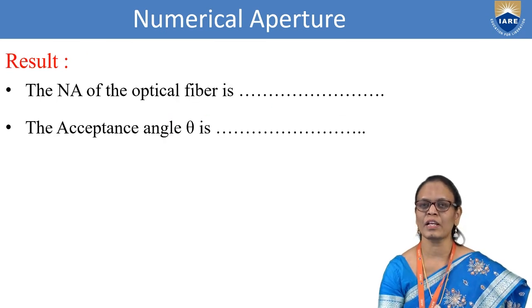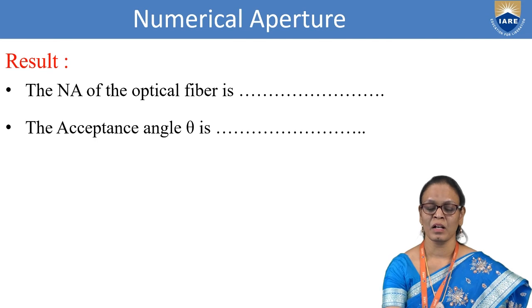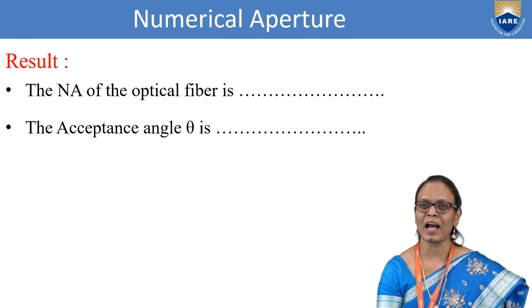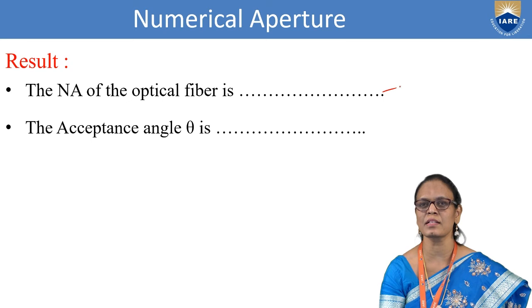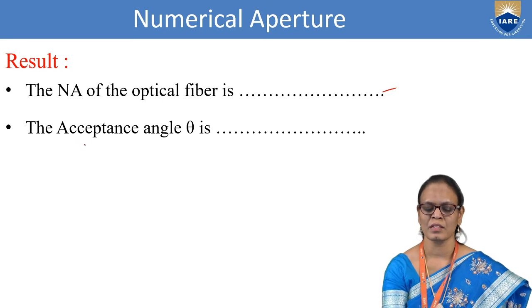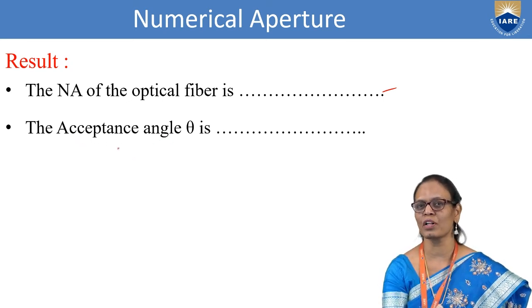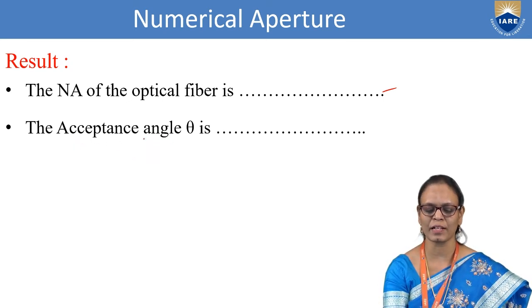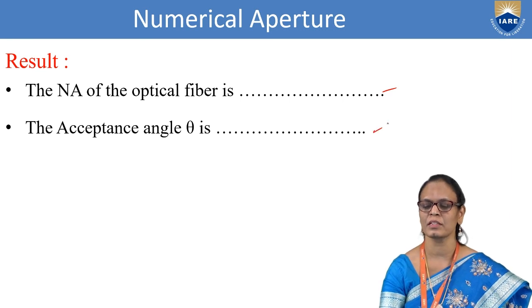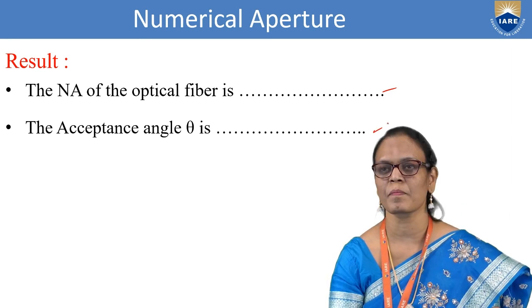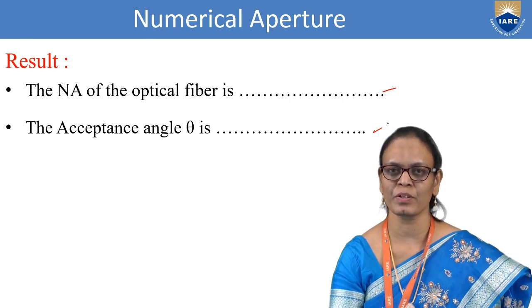We can find the average of all the readings and write the numerical aperture as the final result. Similarly, take the average of all the acceptance angles, and the average acceptance angle is written as θa. Thank you.